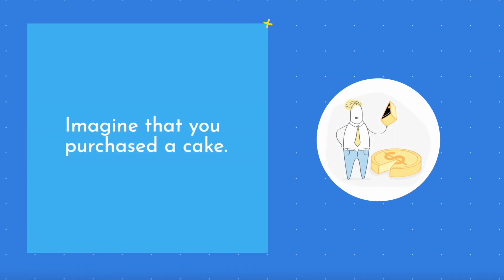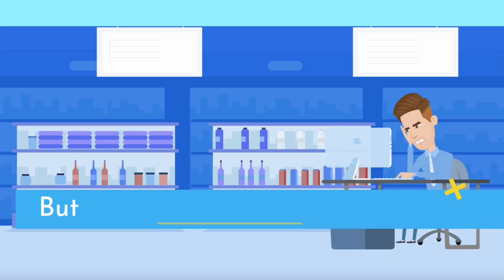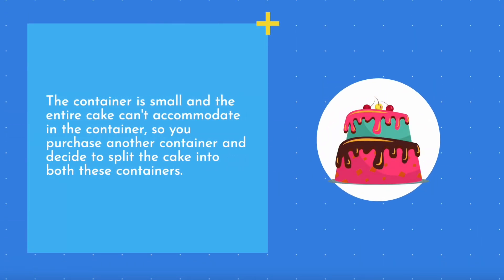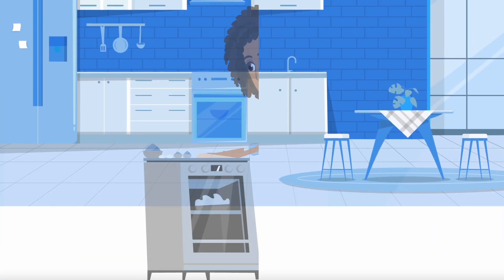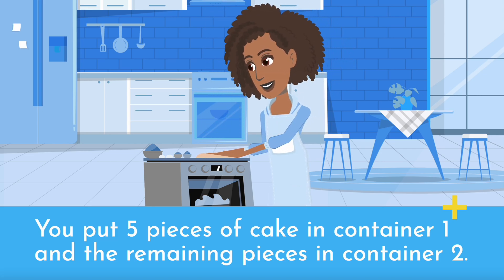Imagine that you purchased a cake. You have a container to store this cake, but there's a problem — the container is small and the entire cake can't fit in the container, so you purchase another container and decide to split the cake into both containers. As a result, you cut the cake into 9 pieces. You put 5 pieces in container 1 and the remaining pieces in container 2.